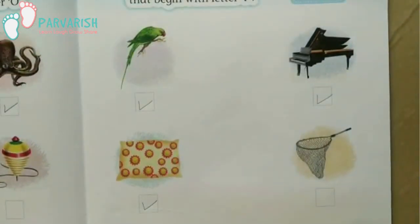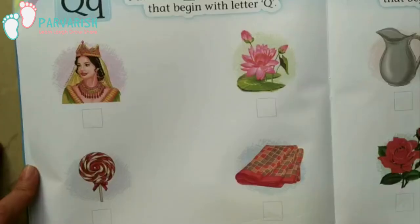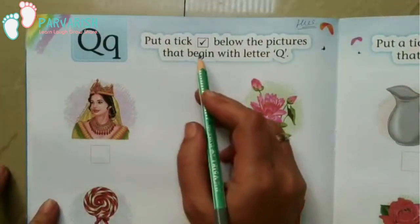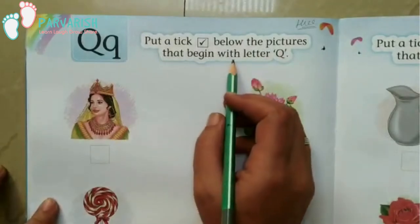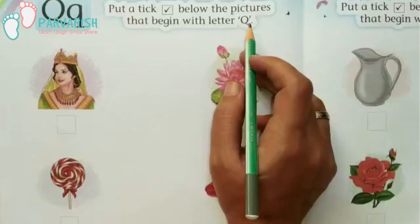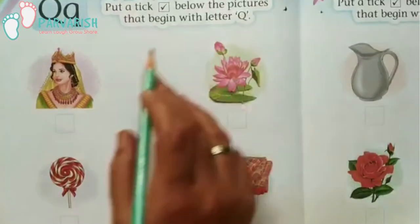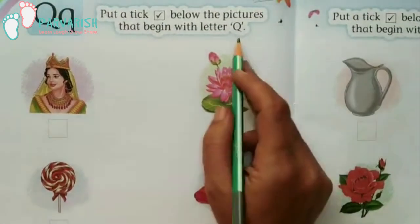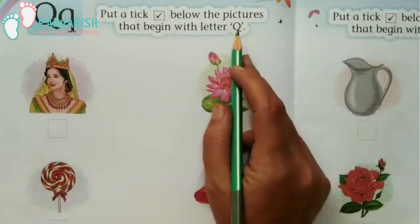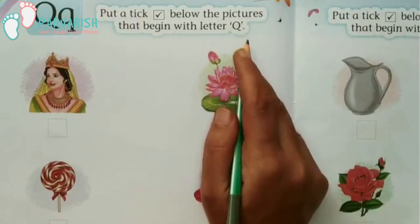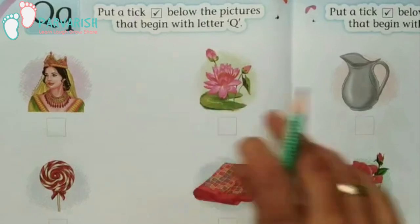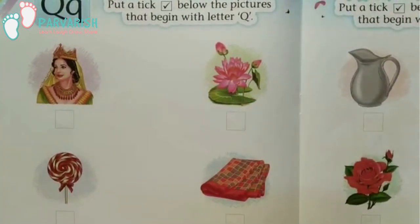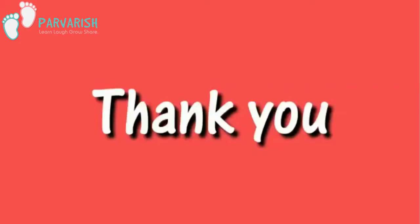So this is your classwork, and students, this is your homework. Put a tick below the pictures that begin with letter Q — means, आपको इस picture के box पे टिक करना है जो letter Q से start होता है. So this is your homework — you have to do all your work and send me pictures on WhatsApp. Thank you.